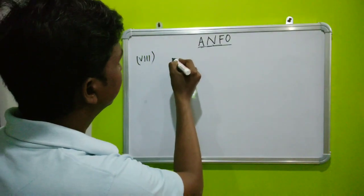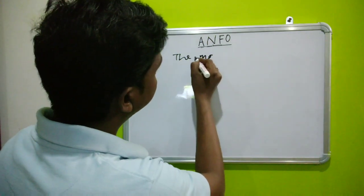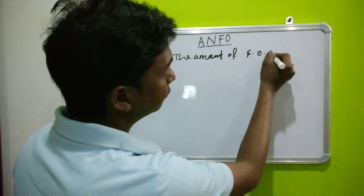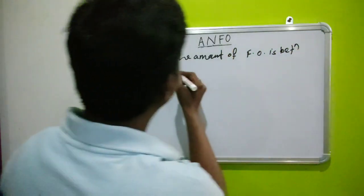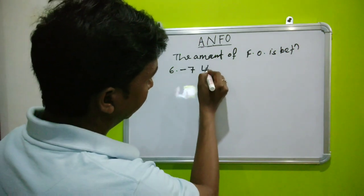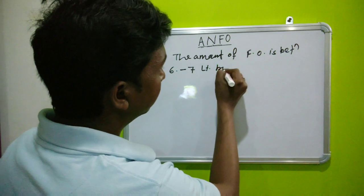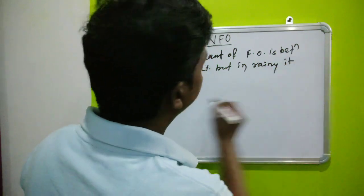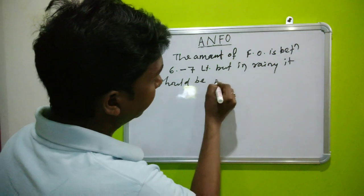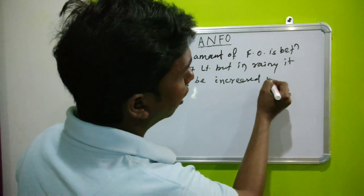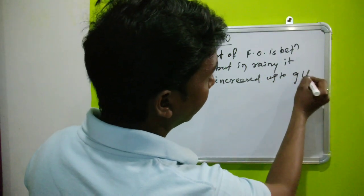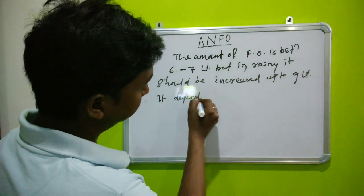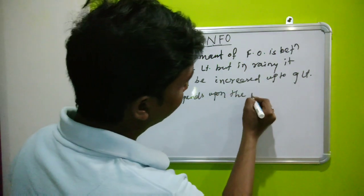In dry season, the amount of fuel oil is between 6 to 7 liters. But in rainy season, it should be increased up to 9 liters. It depends upon the watery condition of fuel.